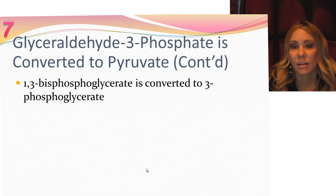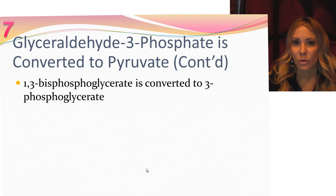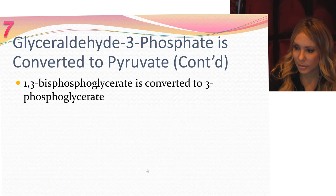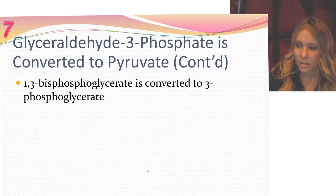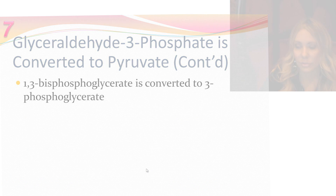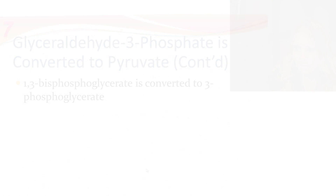Step 7 is also in the payoff phase, so we're going to start creating ATP. We have 1,3-bisphosphoglycerate converted to 3-phosphoglycerate.